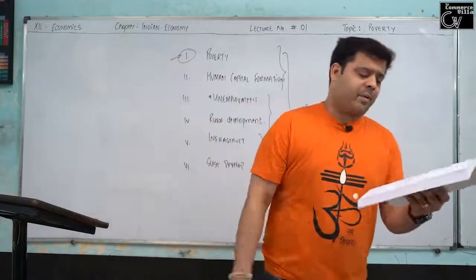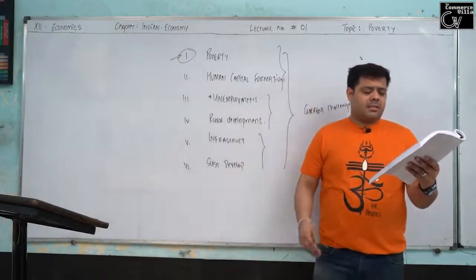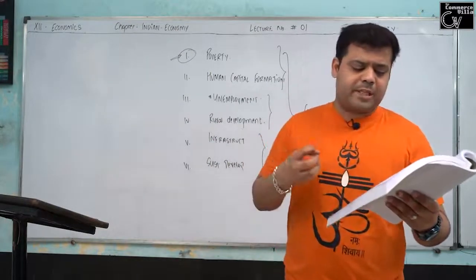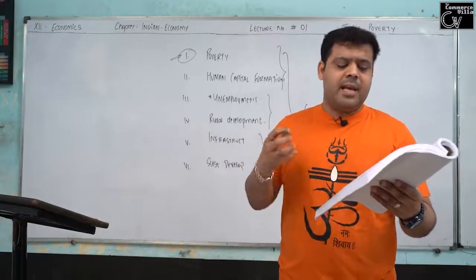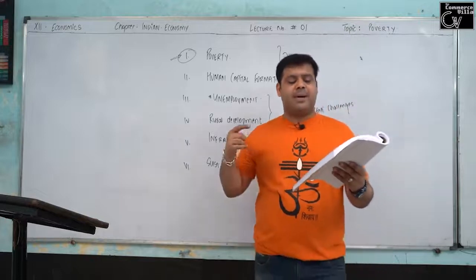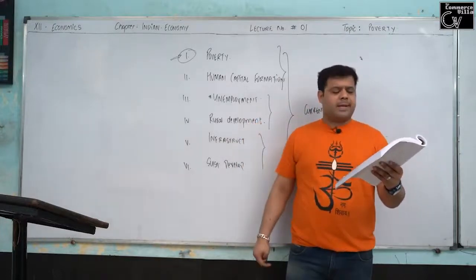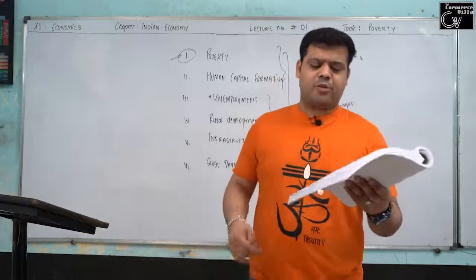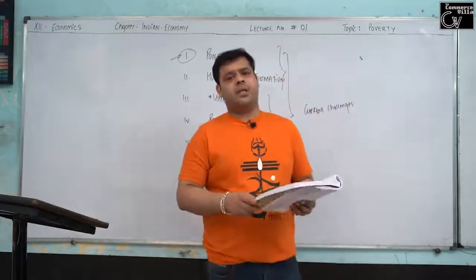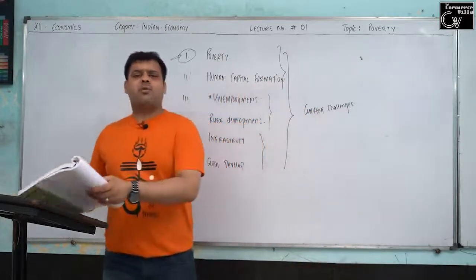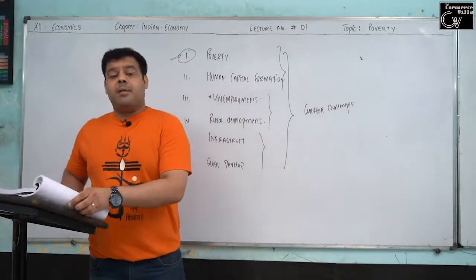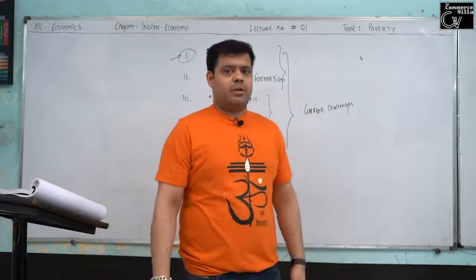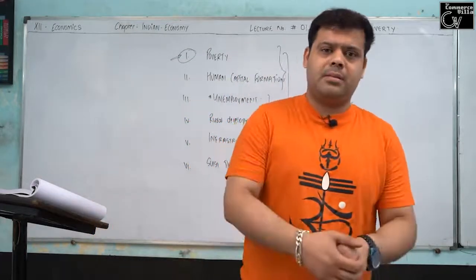What is relative poverty? This means that even though a person is able to fulfill all his basic needs, he is poor in comparison to another person. This concept is prevalent in developed countries. The Gini coefficient is used to measure relative poverty. For example, I am not poor, but in comparison to the Ambanis, I am poor.